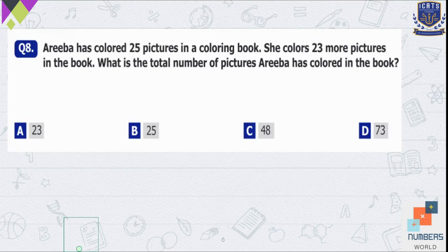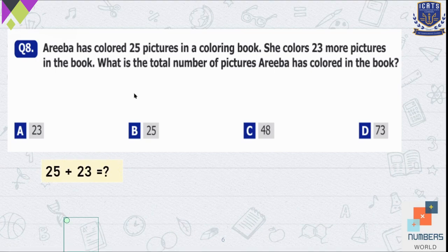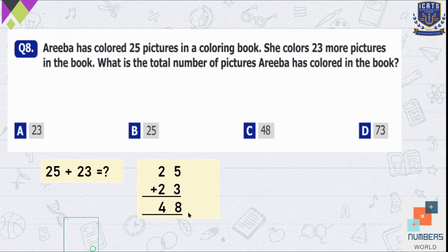Question number 8. Ariba has colored 25 pictures in a coloring book. She colors 23 more pictures in the book. What is the total number of pictures Ariba has colored? We add the given numbers: 25 plus 23. So 5 plus 3 is equal to 8 and 2 plus 2 is equal to 4. The answer is 48 — she has colored 48 pictures in total. So C is our option.